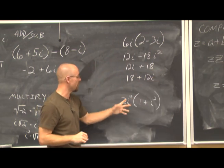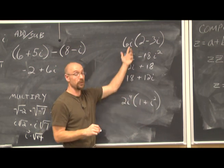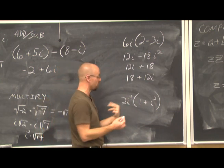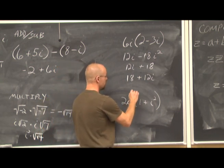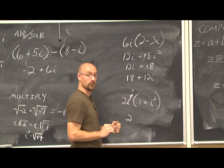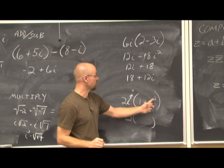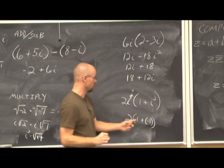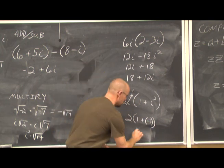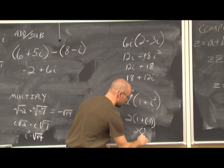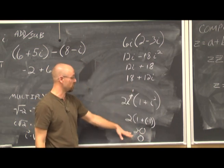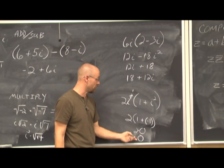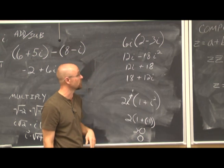When i appears with other powers, simplify the powers of i first before distributing. i to the fourth is divisible by 4, so it equals 1; 1 times 2 is just 2. i squared equals negative 1, so 1 plus negative 1 equals 0, and 2 times 0 is 0 — a real value in the real number system.